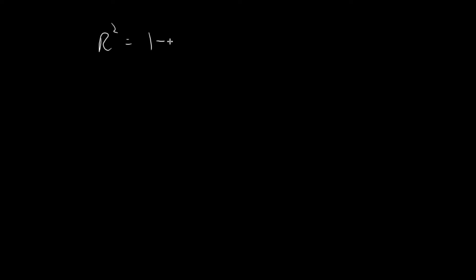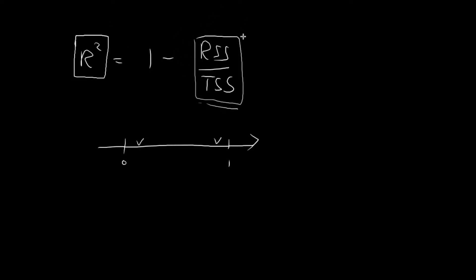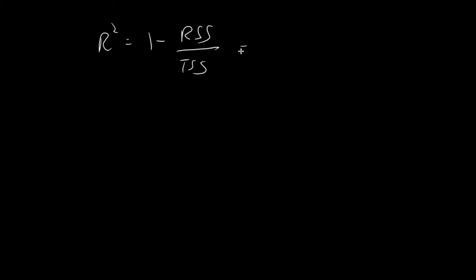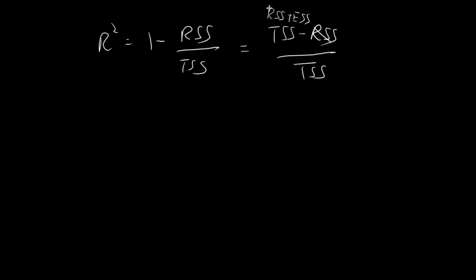Before I end this, I just want to show you one last thing. R-squared is defined as 1 minus RSS divided by TSS. Since TSS equals RSS plus ESS, we can substitute and the RSS terms cancel out. So in the end, you can express R-squared as ESS divided by TSS — this is another way to express R-squared.